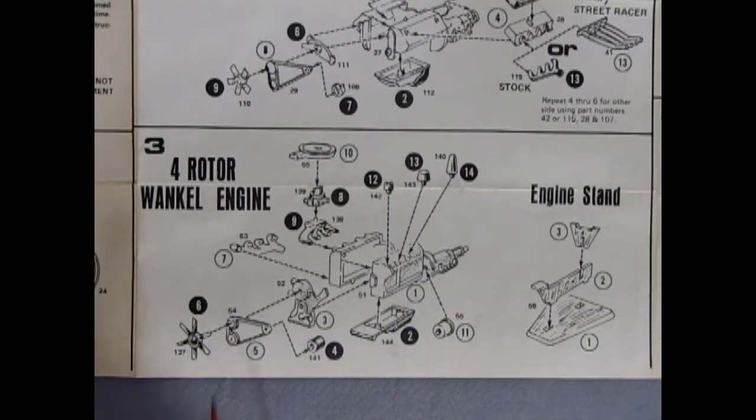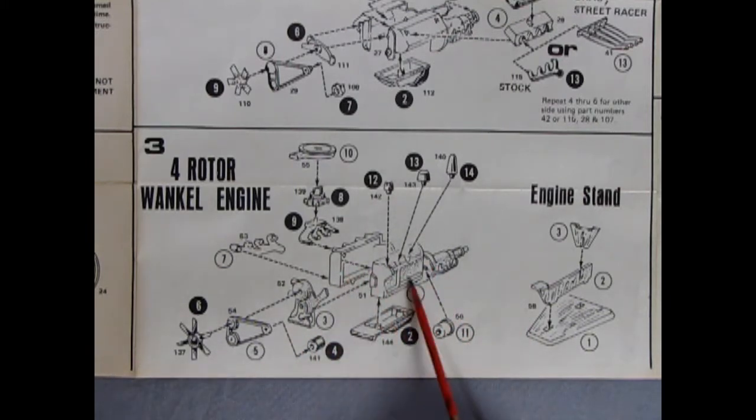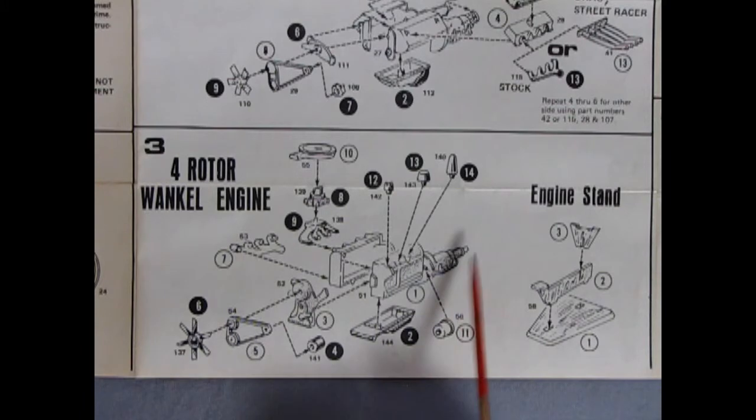This model car also includes the four rotor Wankel engine, which was quite a new and exciting thing back in 1975. And of course, we've got our two-piece engine with the differential on the back. We have a chrome oil pan and the starter motor, as well as some other components. I'm not too sure how the Wankel works. I know it is an engine without a spark plug and without valves, so I know that much, but that's as far as it goes.